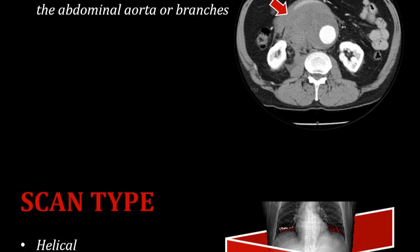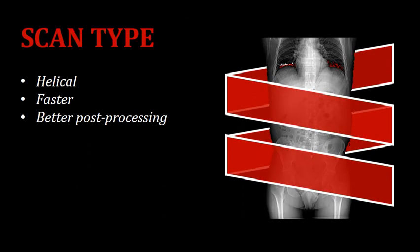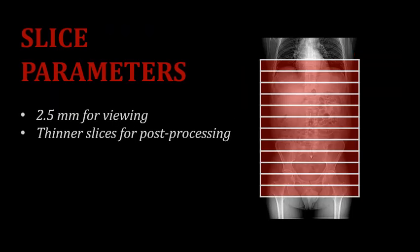So how do we perform this scan? It's actually very similar to imaging of the thoracic aorta, but with a few exceptions. The scan type is helical for all of the normal reasons — it's faster and allows us to follow the bolus of contrast. The slice parameters are also very similar: we'll use a 2.5 millimeter slice thickness for viewing, but as usual, we'll use thinner slices for post-processing.